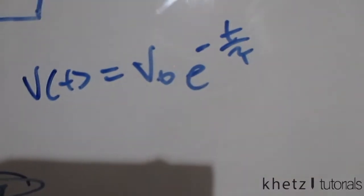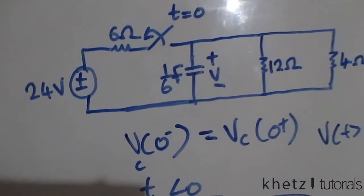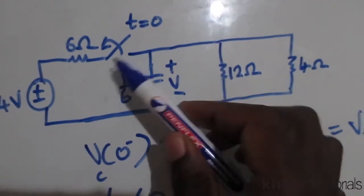Now we have our initial condition and we know that Vc is equal to our initial voltage to the power negative t divided by the time constant. Now let's proceed to find the new circuit after removing this at time zero.